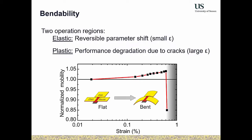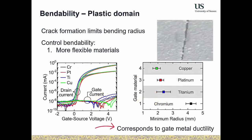For designing functional circuits, we need to solve two things: avoid transistor cracking during use, and ensure that even without cracking, parameter shifts don't degrade circuit performance. These two problems must be resolved semi-independently. Let's look at plastic performance first — how to avoid crack formation.